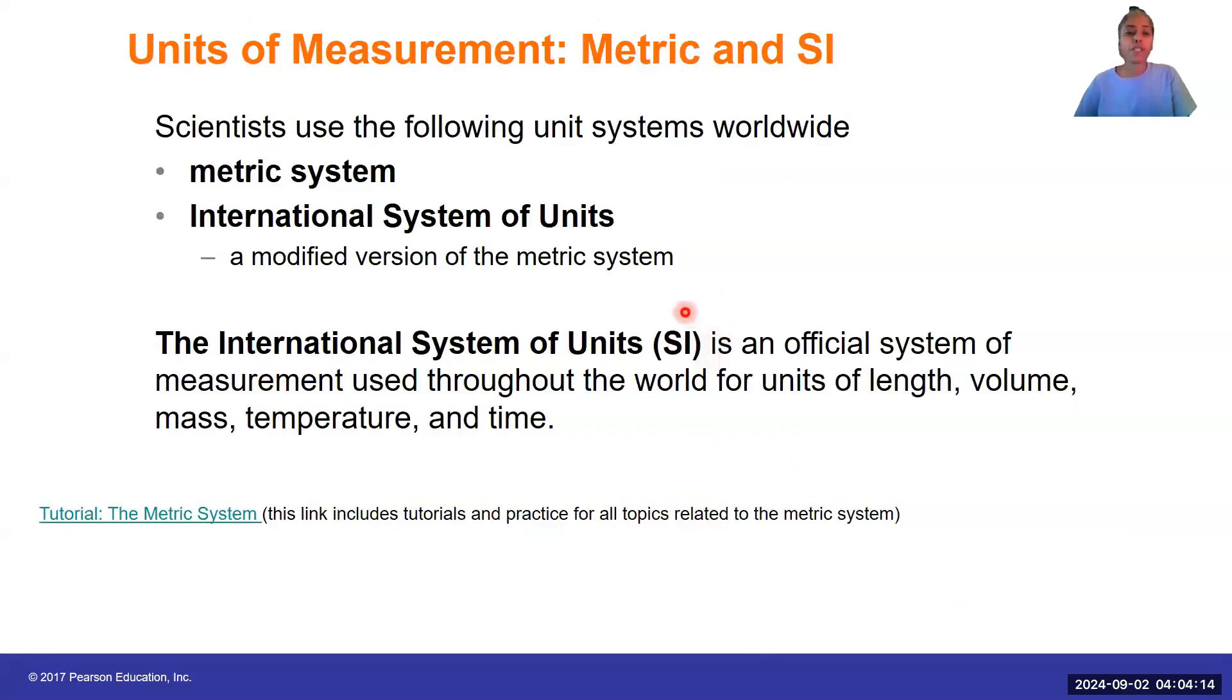There are two different units of measurement that we use in chemistry. The main one is the metric system, and then the other one is called the International System of Units. It's a modified version of the metric system, and generally, these are an official system that is used throughout the world. On these videos, you will see hyperlinks in the presentation. You have these presentations posted for you on Top Hat. When you download them, you are able to access these hyperlinks by clicking on them.